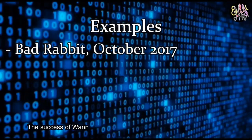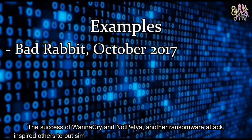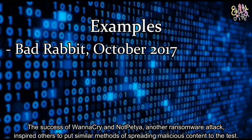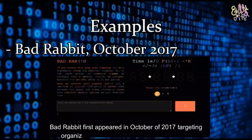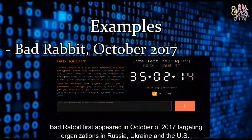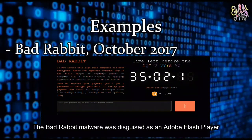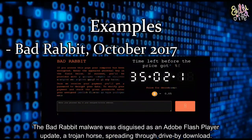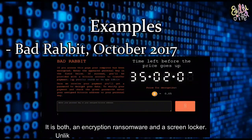BadRabbit — the success of WannaCry and NotPetya, another ransomware attack, inspired others to test similar methods of spreading malicious content. BadRabbit first appeared in October 2017, targeting organizations in Russia, Ukraine, and the US. The BadRabbit malware was disguised as an Adobe Flash Player update — a Trojan horse — spreading through drive-by download. It is both an encryption ransomware and a screen locker.